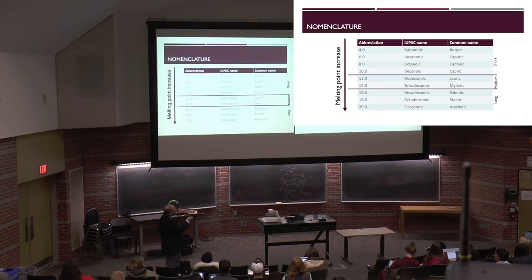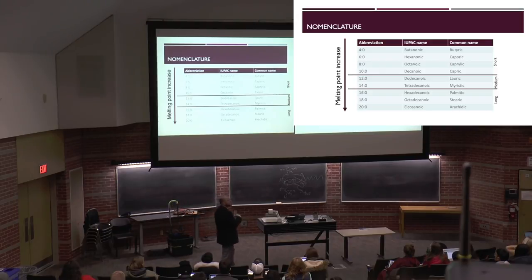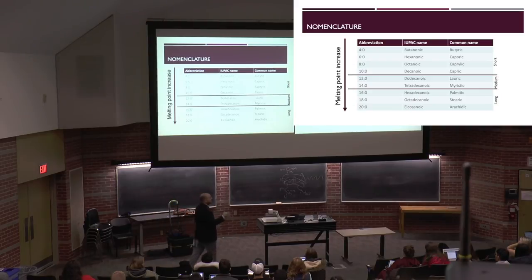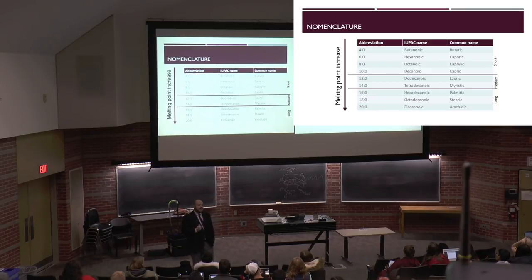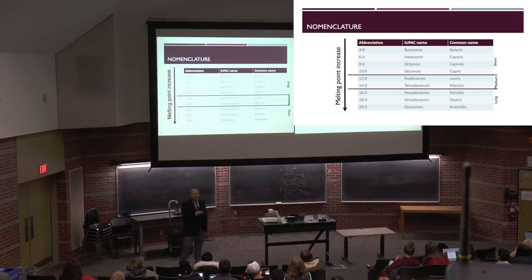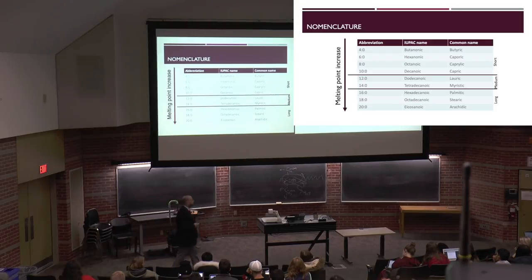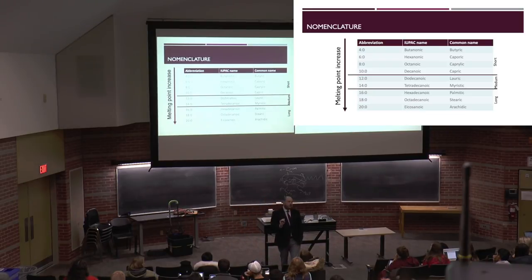The IUPAC name isn't commonly used anymore. We typically now see common names like butyric, caprylic, caproic. But it's important to recognize the defining features of the IUPAC name: 'bute' represents 4 carbons, 'hex' is 6, 'oct' is 8, 'dec' is 10, and 'enoic acid' is indicative of the presence of the carboxylic acid group. Once we put it onto a triacylglycerol, we drop the '-oic' because that carboxylic acid group is now esterified into an ester group.